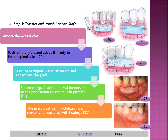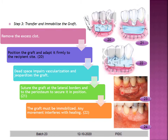Step three is to transfer and immobilize the graft to the recipient site. Remove any excess clot that has formed, position the graft, and adapt it firmly to the recipient site. Dead space between the graft and underlying periosteum may impair vascularization and jeopardize the graft. Suture the graft at the lateral borders to the periosteum to secure it. The graft must be immobilized, as any movement can interfere with healing. You can see the clinical picture showing the increased width of attached gingiva after the procedure.